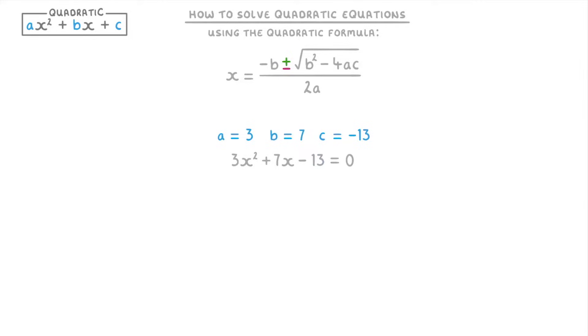So to use the quadratic formula to solve this quadratic, all we have to do is plug these values into the formula. But weirdly we end up getting two answers because of this plus-minus thing, which means that we have to do the formula twice. Once with a plus sign and then again with a minus sign.